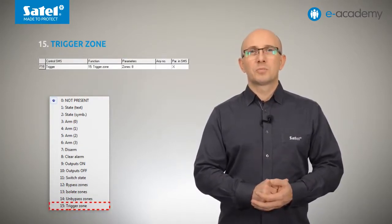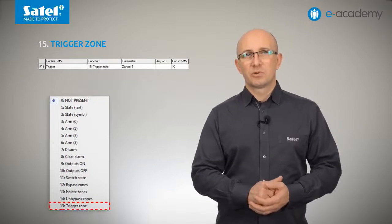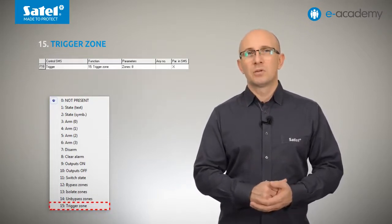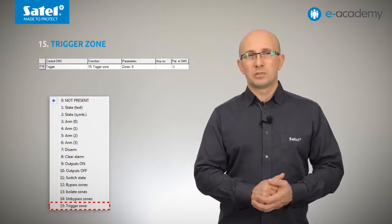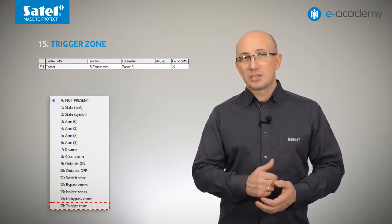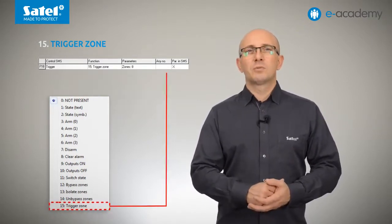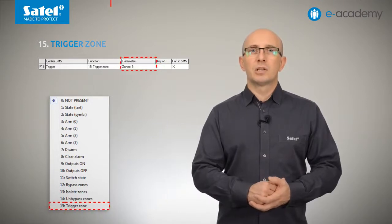The last available function in SMS control is 15 trigger zone. Violation of zones can have many applications. This option can be used, for example, to control automation or other functions of a given alarm system. However, it should be remembered that this particular function can only apply to one zone at a time.